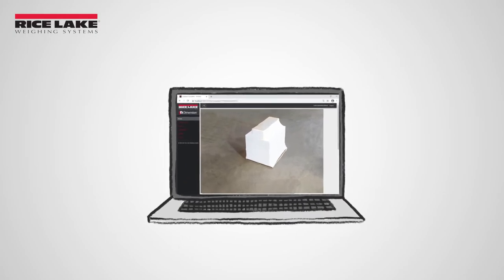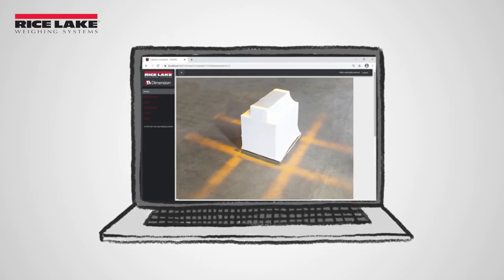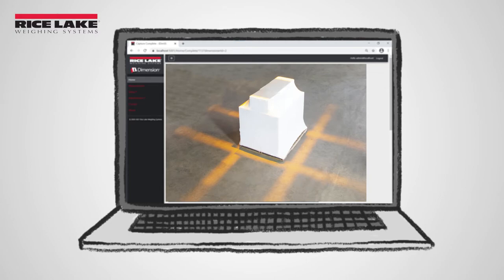LED light kits illuminate the dimensioning zone of the LTL, allowing forklift drivers to quickly and safely position the freight.